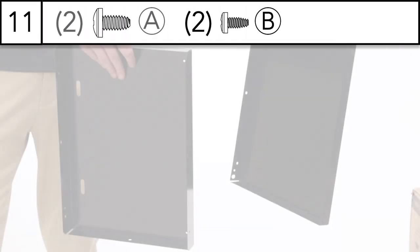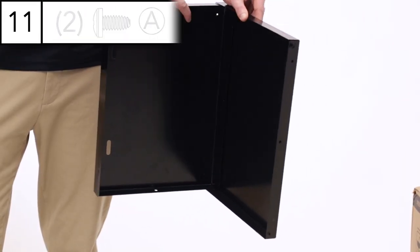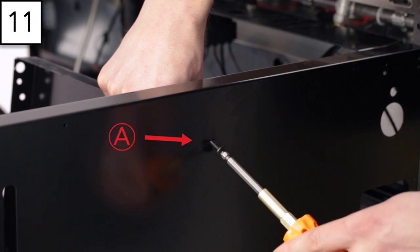Step 11: Assemble the two cabinet side pieces and secure the side panel using the screws provided.